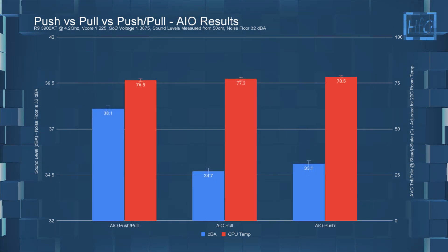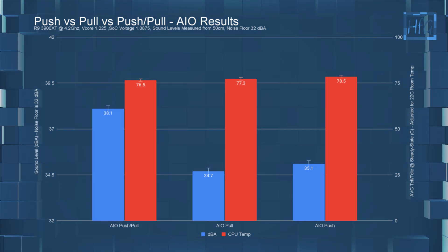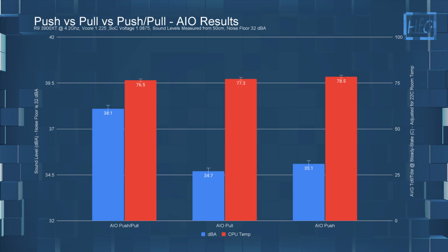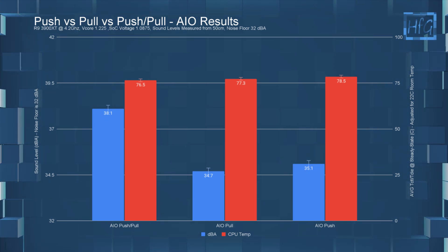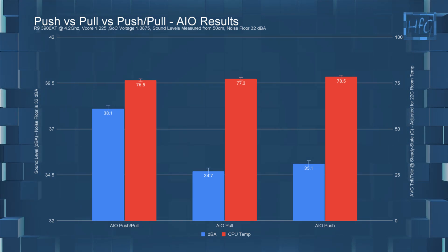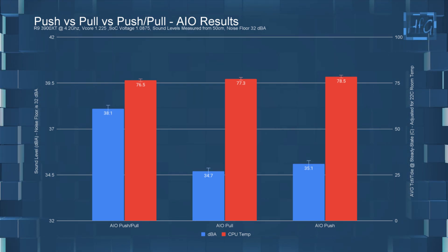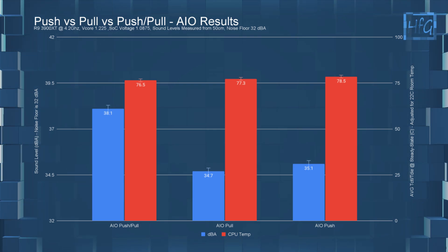Jumping over to the AIO testing, and again I got some interesting results. Pull was both quieter and cooler than push, which was definitely not expected. The differences were not substantial, but they were and are repeatable. And again the push-pull configuration was the coolest, but again was also the loudest.